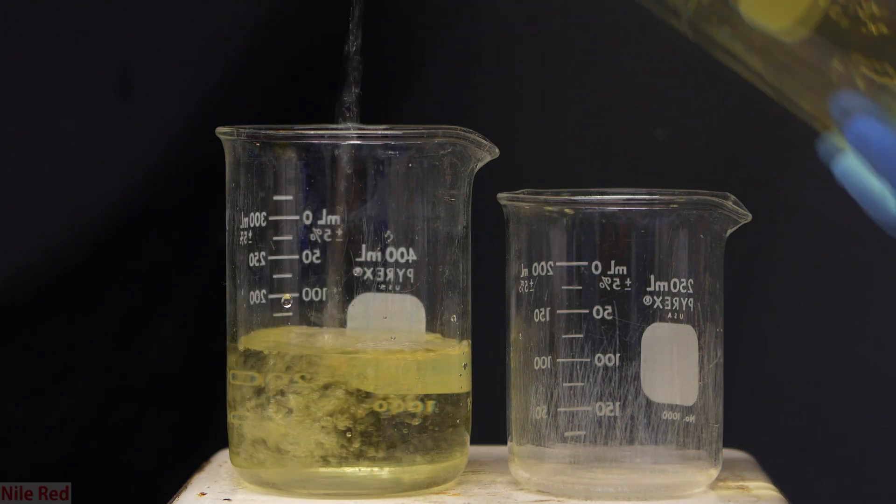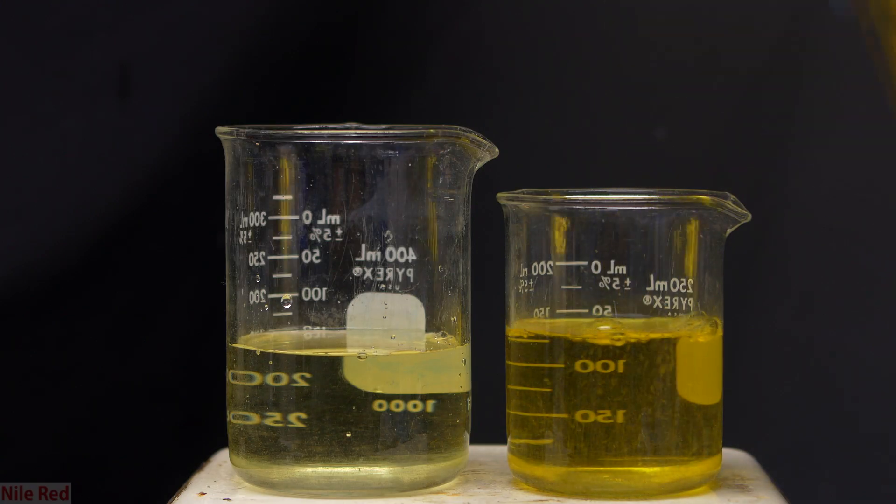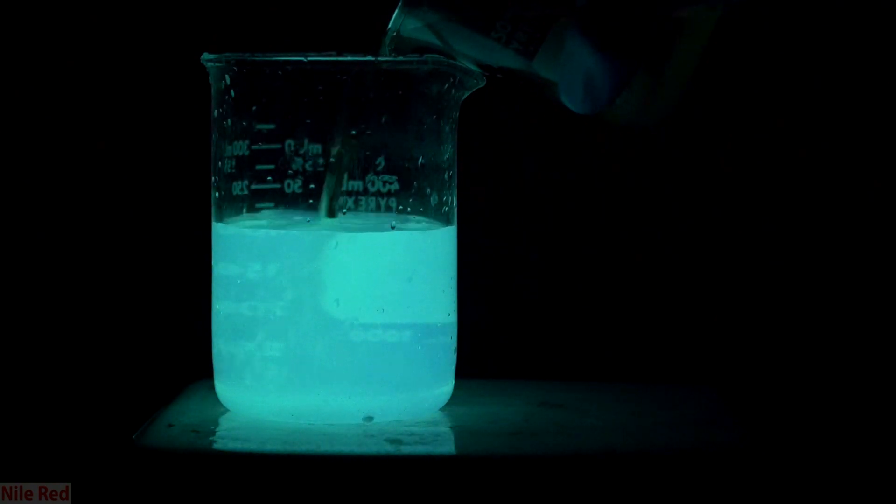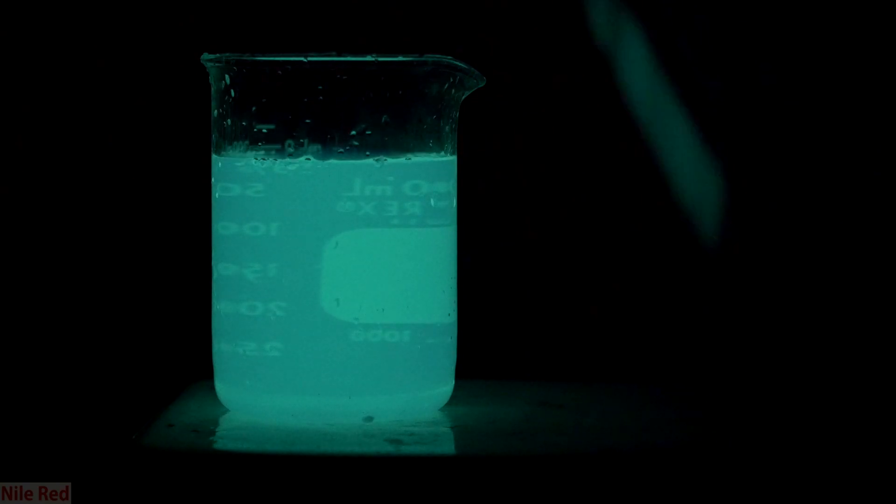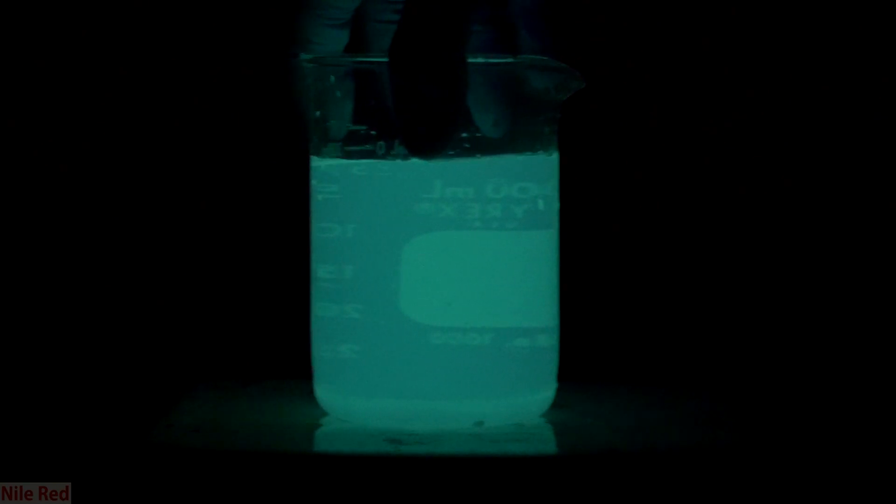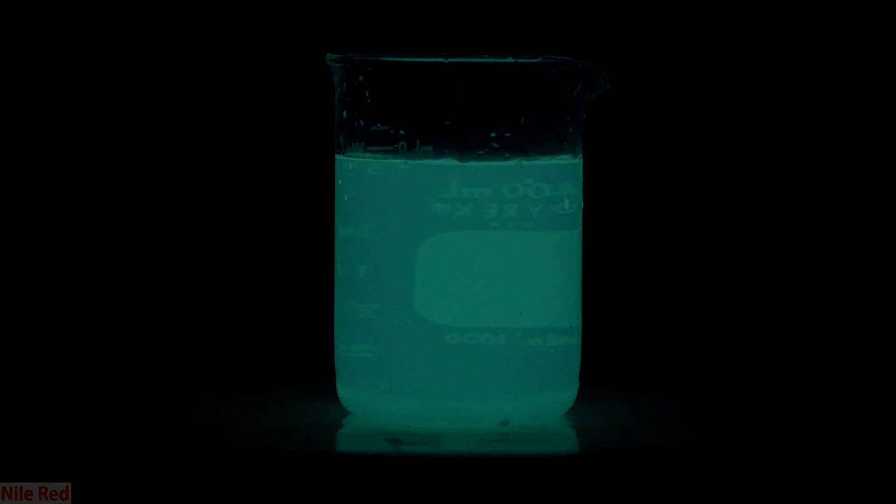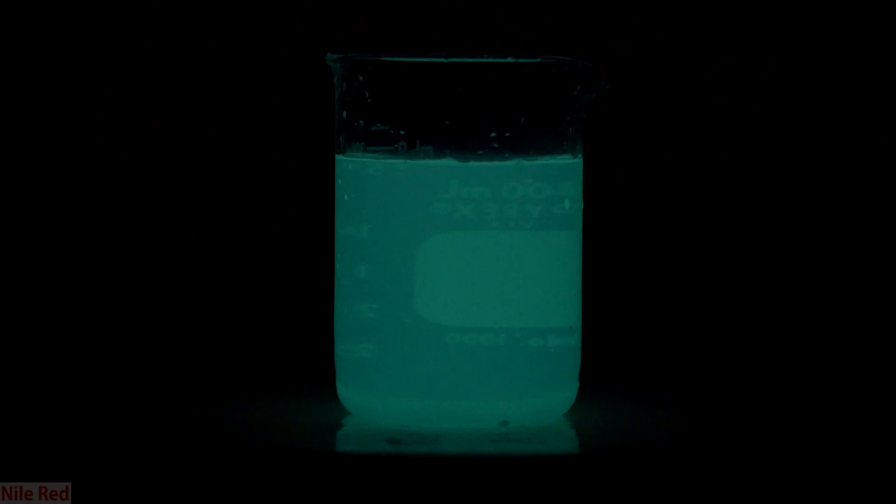Now it's time to test out the luminol and to do this we pour out equal volumes of each of the solutions. I pre-adjust the camera so it's more sensitive in the dark and then I turn off the lights. Then when the two solutions are mixed you can see that they immediately start to glow. The initial glow is pretty bright but it immediately dies down a little bit. The recipe that I use though will maintain a steady glow like this for something like 50 seconds. This recipe results in a long steady glow but some other recipes result in a very short bright glowing. It's actually a lot brighter in person it's just really hard for the camera to pick up low light.